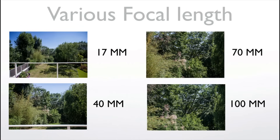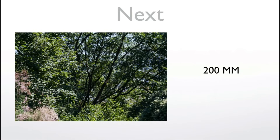Here's a demonstration: I put my camera on a tripod and changed lenses. At 17mm it's a very wide angle shot — you can see a lot of the scene. At 40mm I'm less wide and getting closer. At 70mm I'm zoomed in even more. At 100mm even further. And at 200mm I'm really zoomed in and can see all the details in the trees.